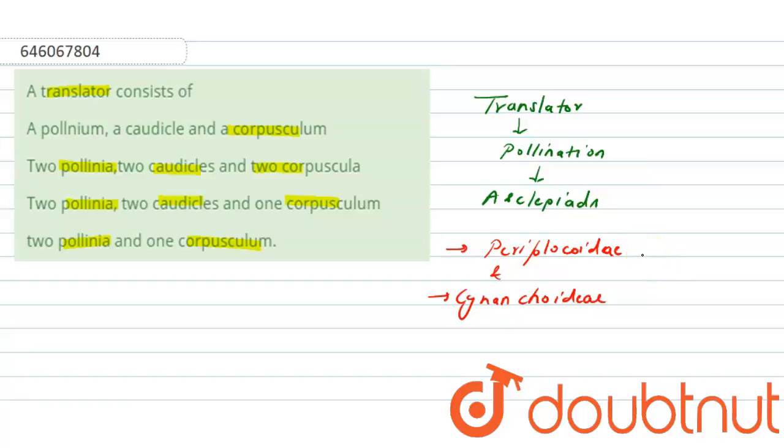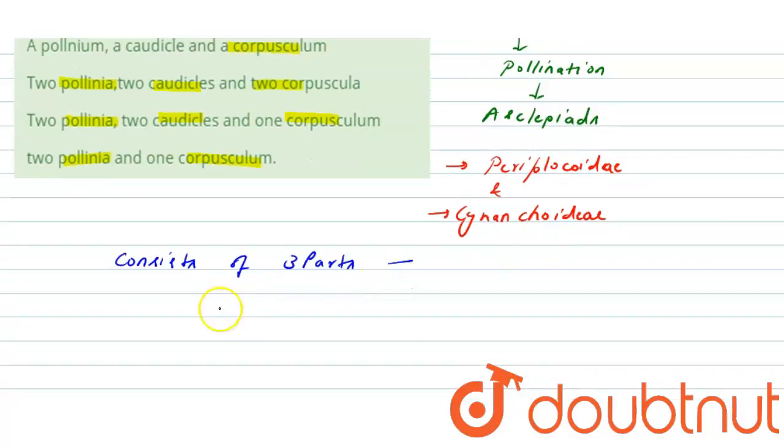It consists of three parts which are corpuscular, polynea which is also called pollen, and two corticals. These are the structures of the attachment to stigma.